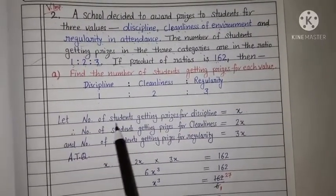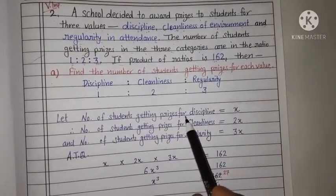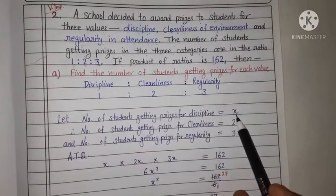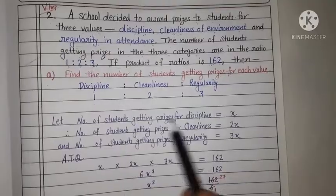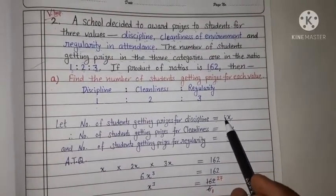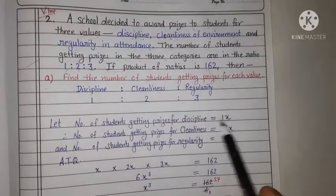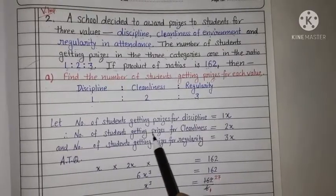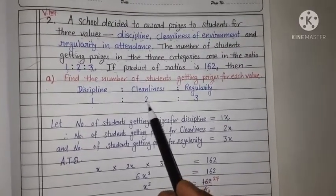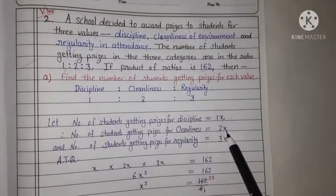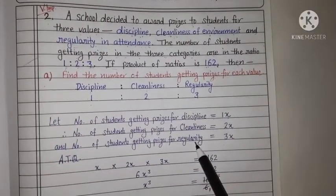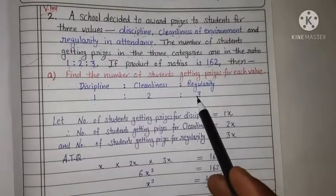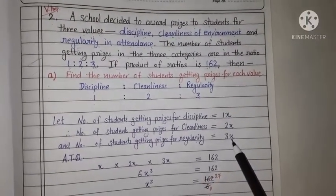So firstly, we let the number of students getting prizes for discipline that is equal to x. Ratio ko variable se multiply karenge. 1 ko agar x se multiply karte hain, toh woh hamare paas banega 1x. Therefore, number of students getting prizes for cleanliness ban jayenge 2 multiply x, 2x. And number of students getting prizes for regularity hamare paas ban jayenge 3 multiply x, 3x.